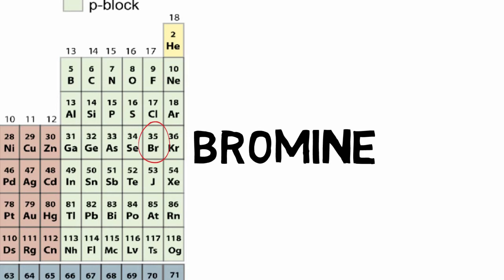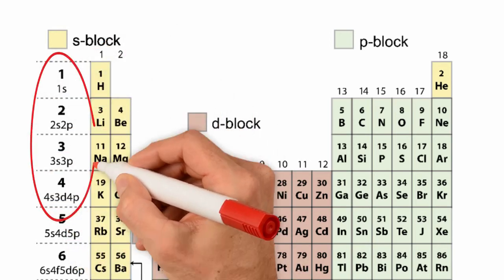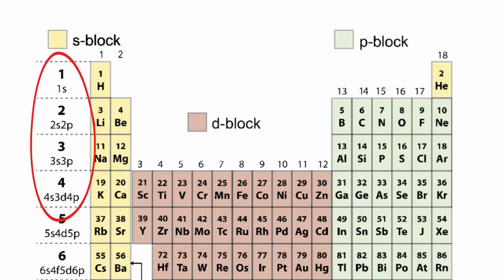we can write the electron configuration of bromine as 1s2, 2s2, 2p6, 3s2, 3p6, 4s2, 3d10, 4p5.